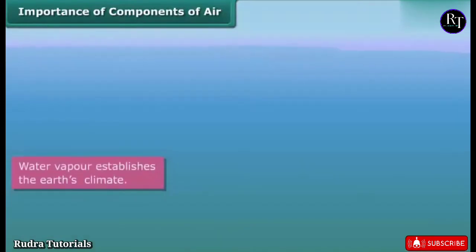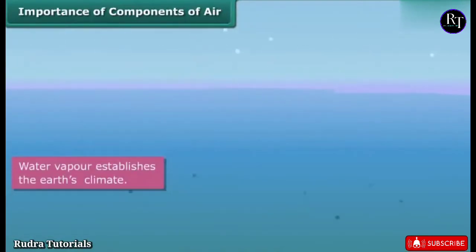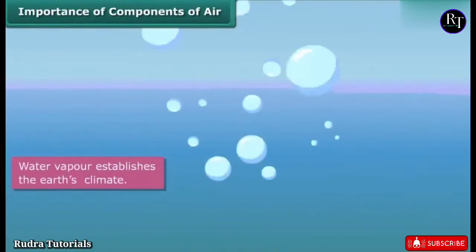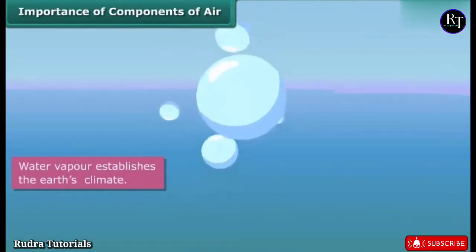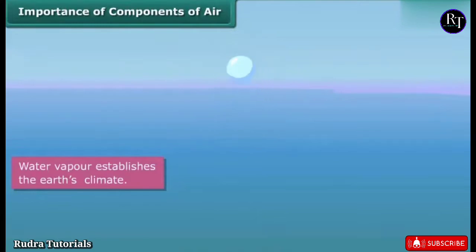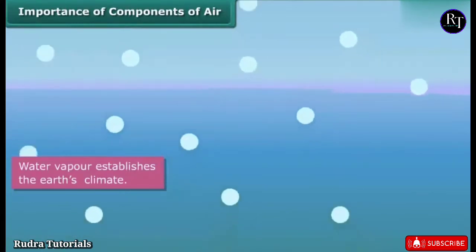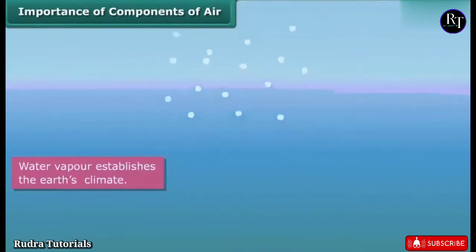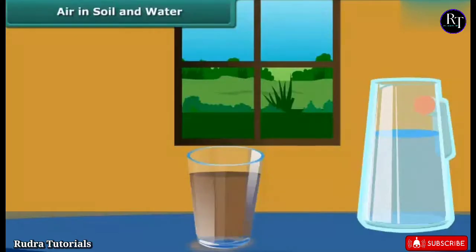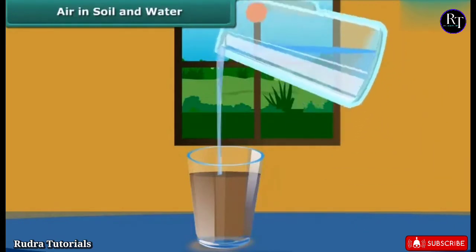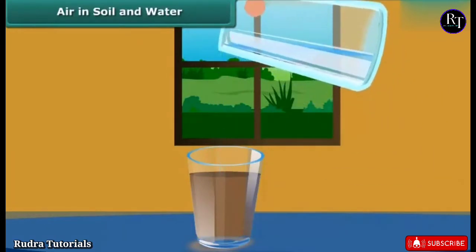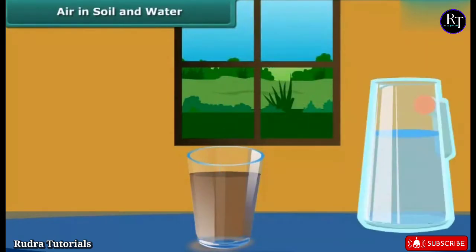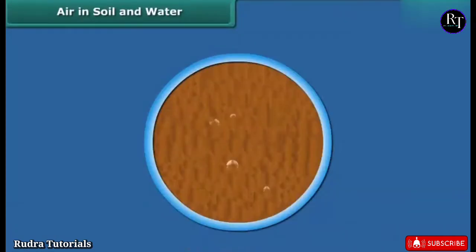Water vapor plays an important role in the water cycle. It helps maintain the temperature on Earth by trapping infrared radiation from the sun.